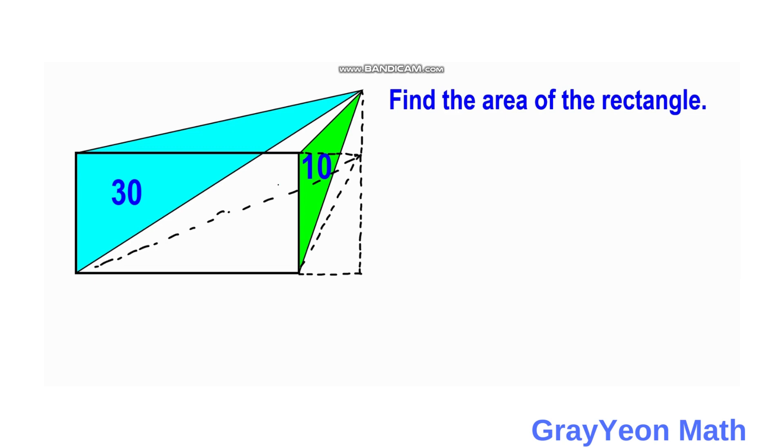Since we are just shearing it, they would have the same area respectively, 30 square units and 10 square units. So we are not changing anything, we are just changing the position of the vertex, but not the area.